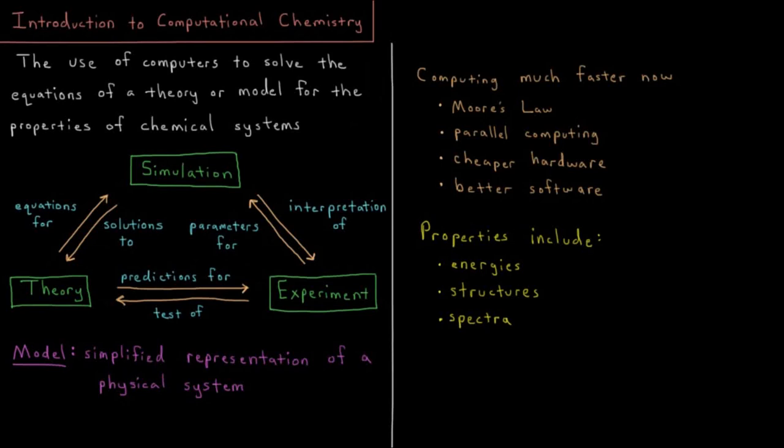Welcome to the introduction to the computational chemistry playlist. Computational chemistry could be defined as the use of computers to solve the equations of a theory or model for the properties of chemical systems.